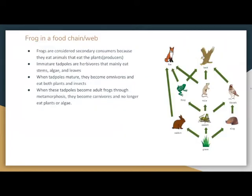Frogs in the food chain. Frogs are considered secondary consumers because they eat animals that eat plants, which are producers. Immature tadpoles are considered herbivores that mainly eat stems, algae, and leaves. When tadpoles mature, they become omnivores and eat both plants and insects. When these tadpoles become adult frogs through metamorphosis, they become carnivores and no longer eat plants or algae.